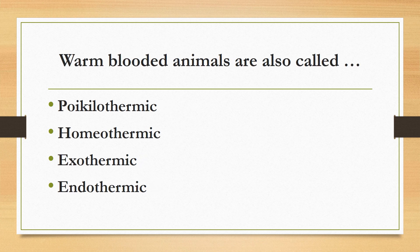Warm-blooded animals are also called: poikilothermic, homeothermic, exothermic, or endothermic? The correct answer is homeothermic. Warm-blooded animals are called homeothermic — those whose body temperature does not change according to the environment. Cold-blooded animals are called poikilothermic — those whose body temperature changes according to the environment.